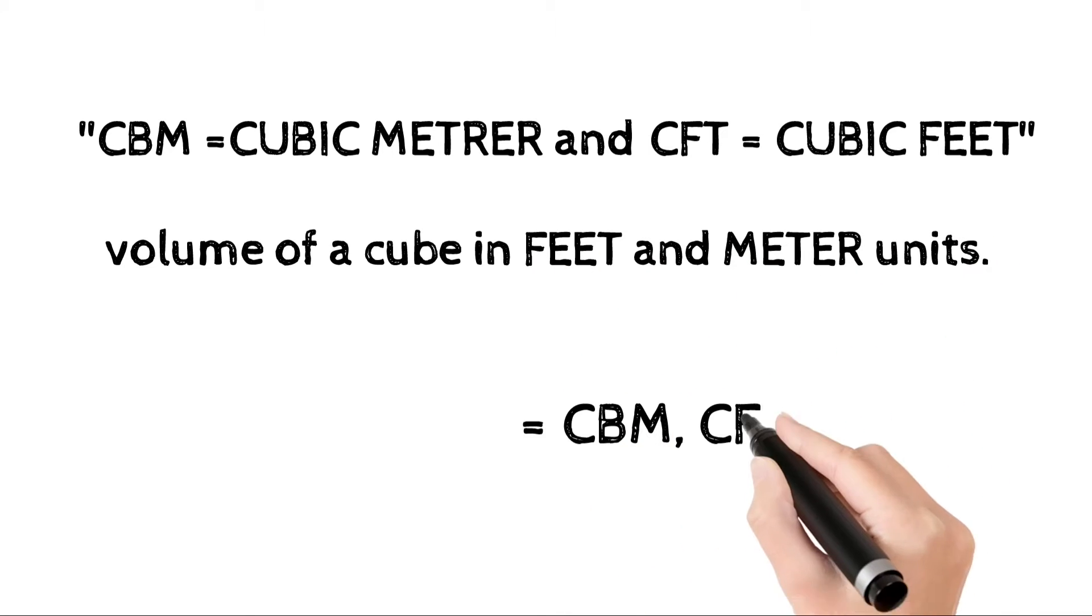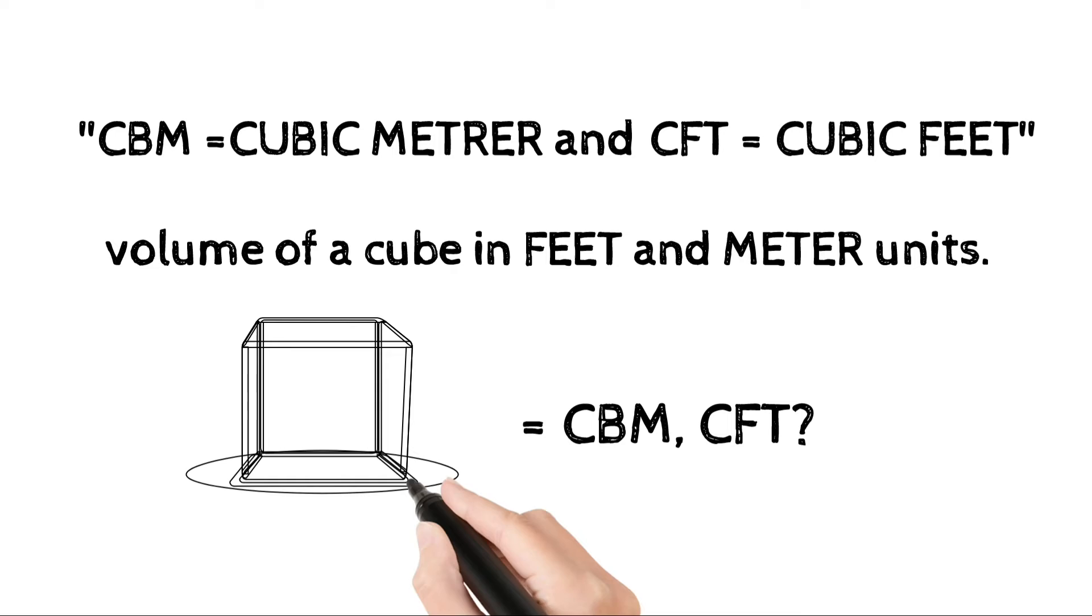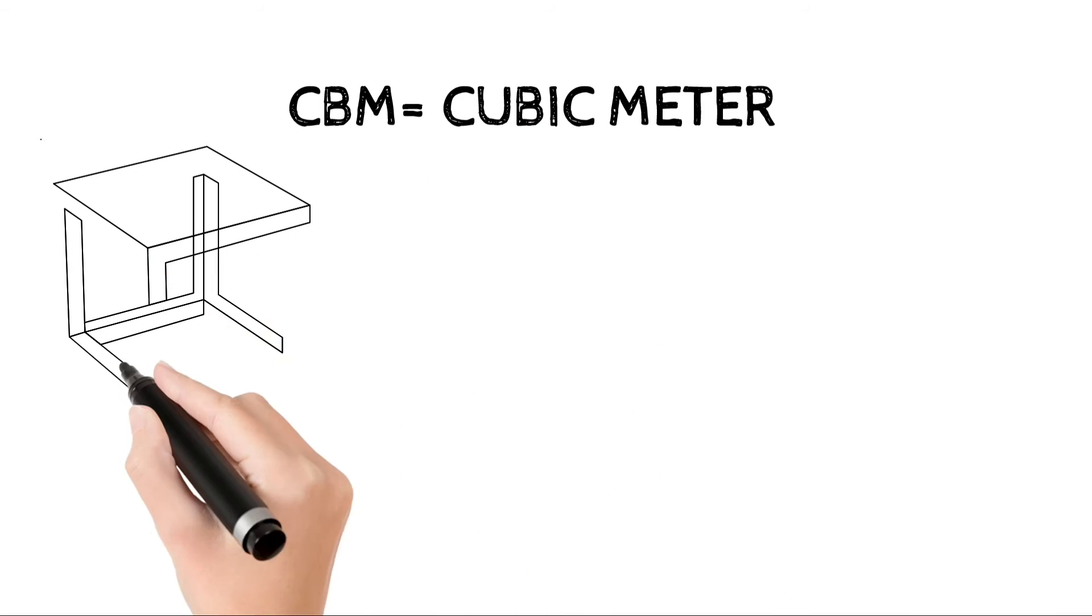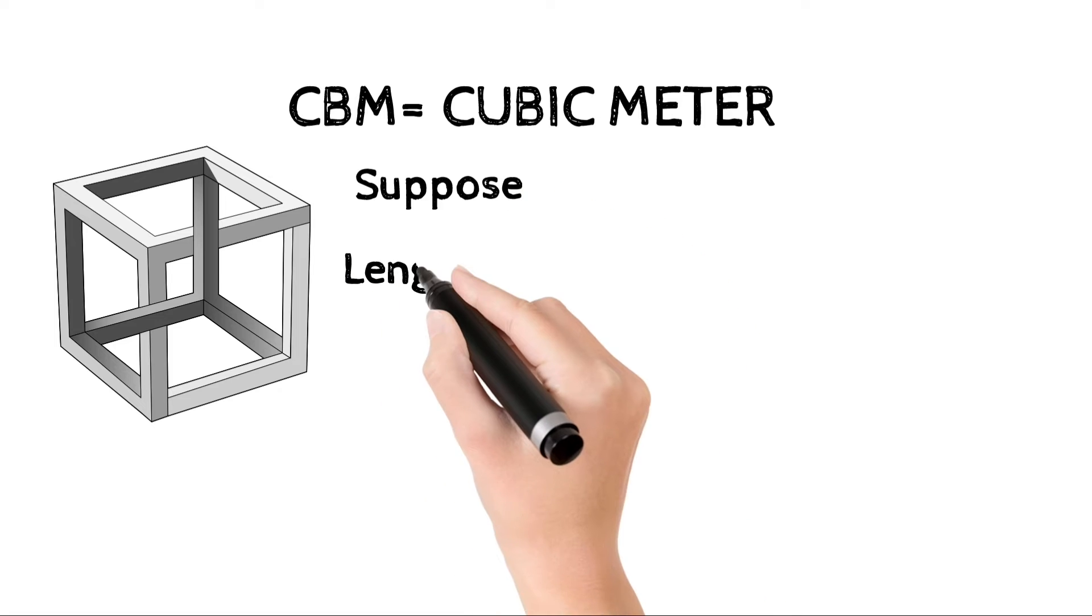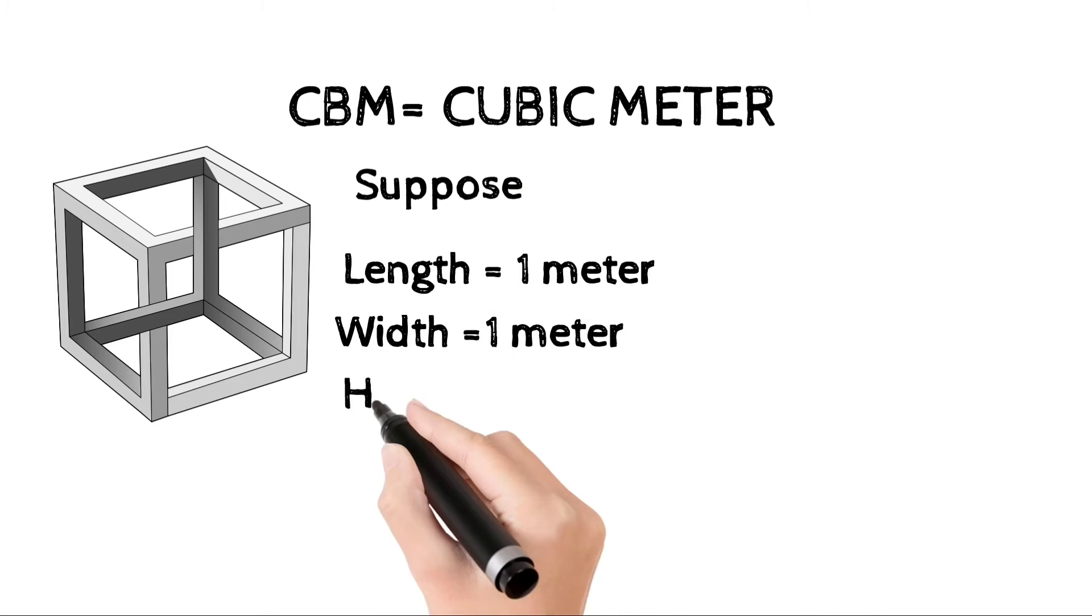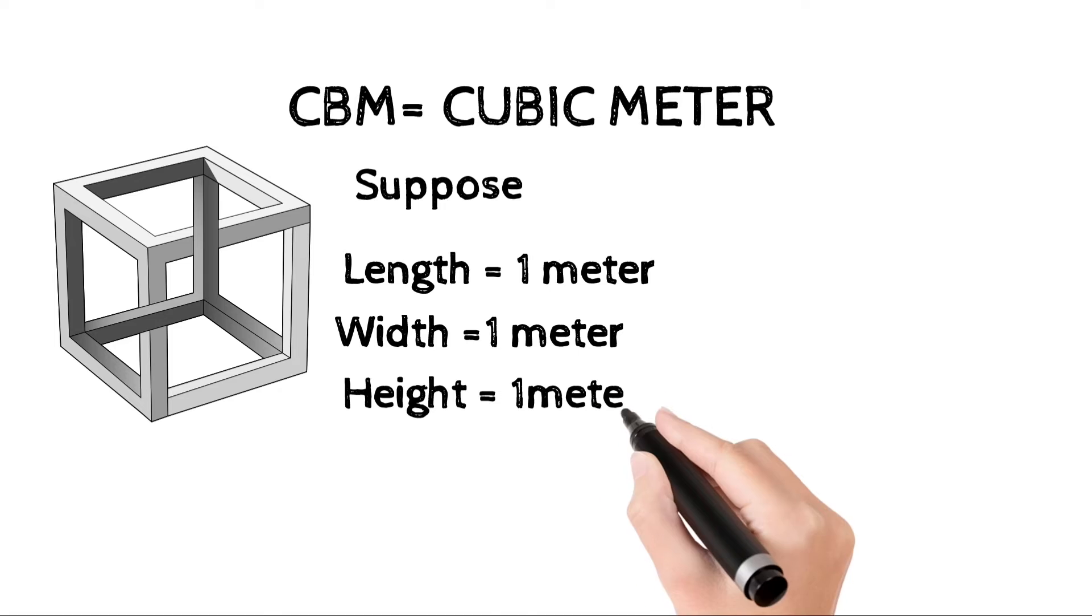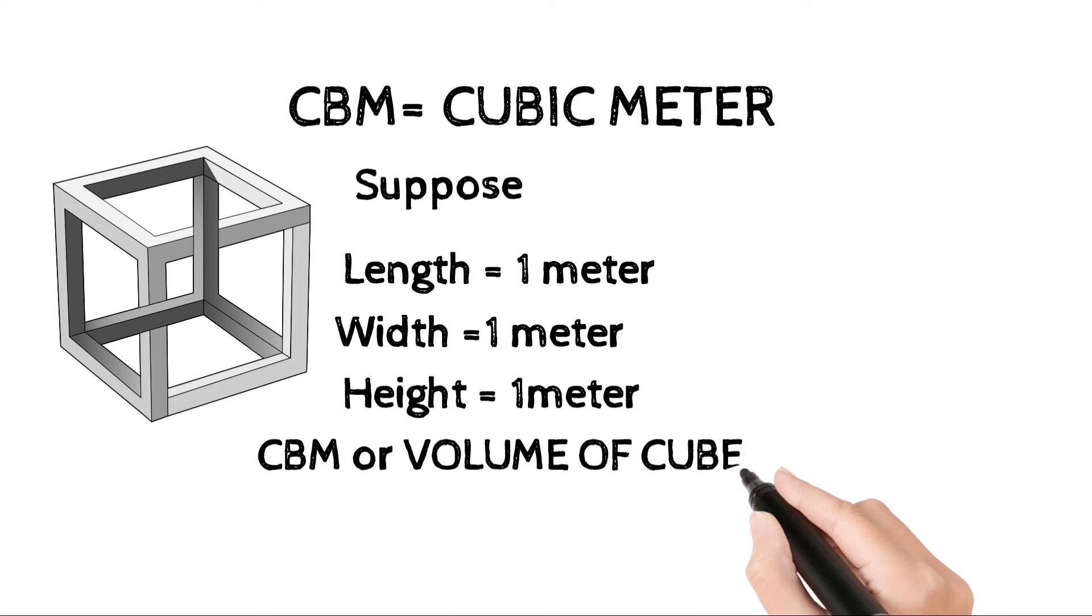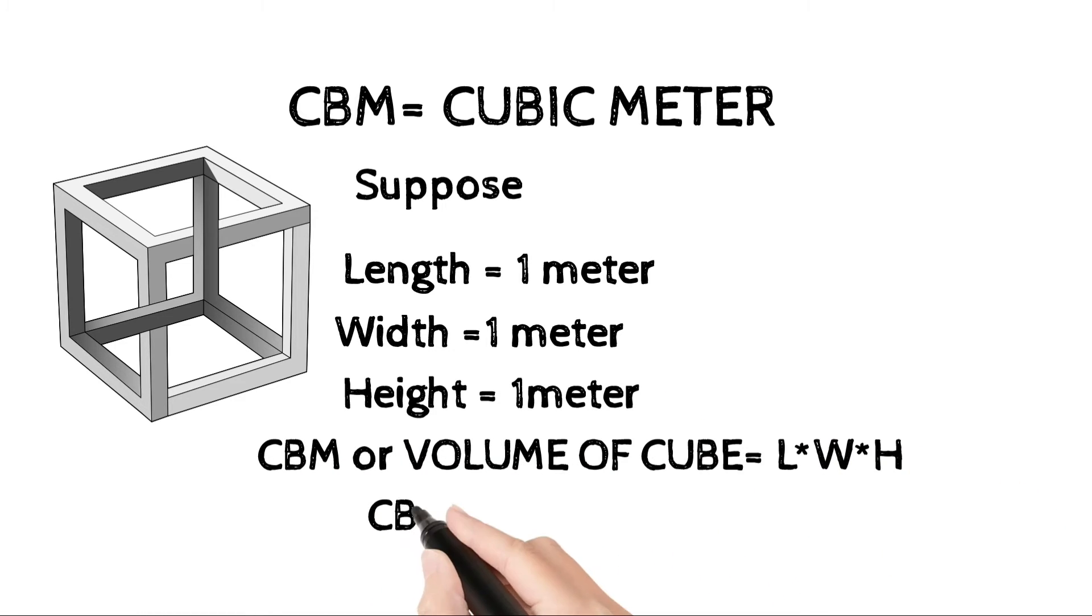Let's understand CBM and CFT. Let's take an example of CBM of a cube. Suppose length, width, and height of cube is 1, 1, 1 meter. Then CBM or volume of cube is L multiply by W multiply by H. So CBM is 1 meter cubed.